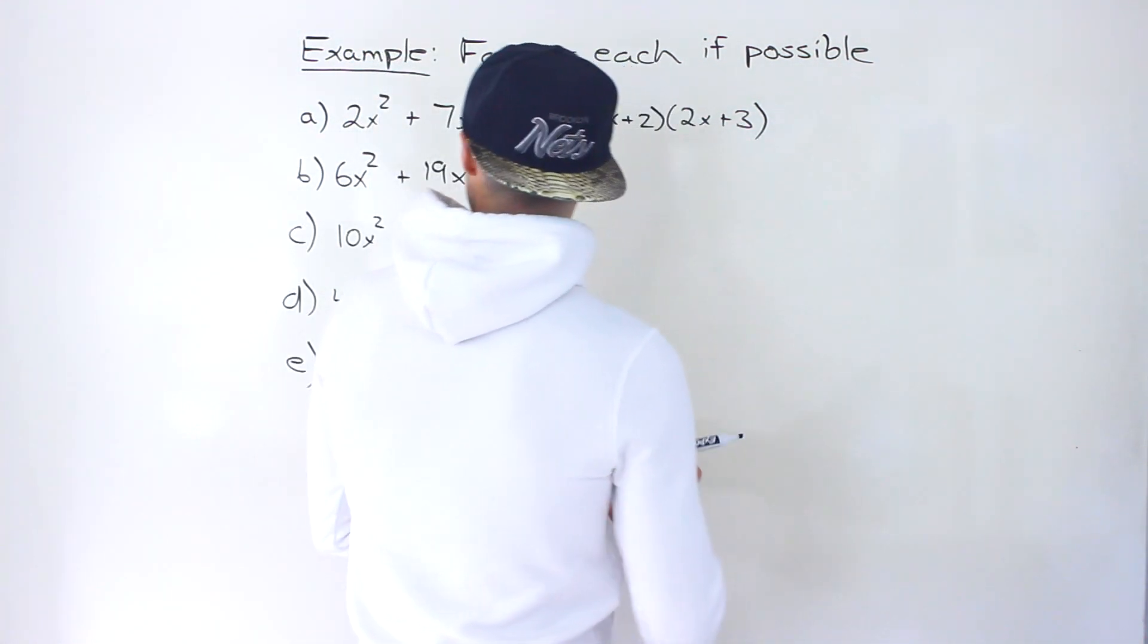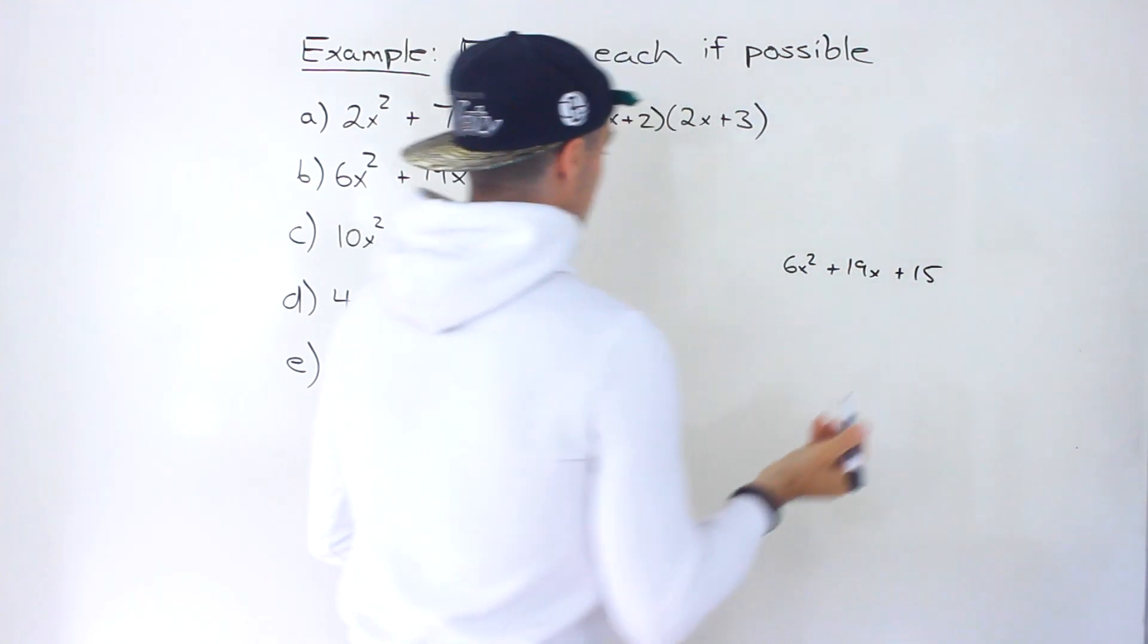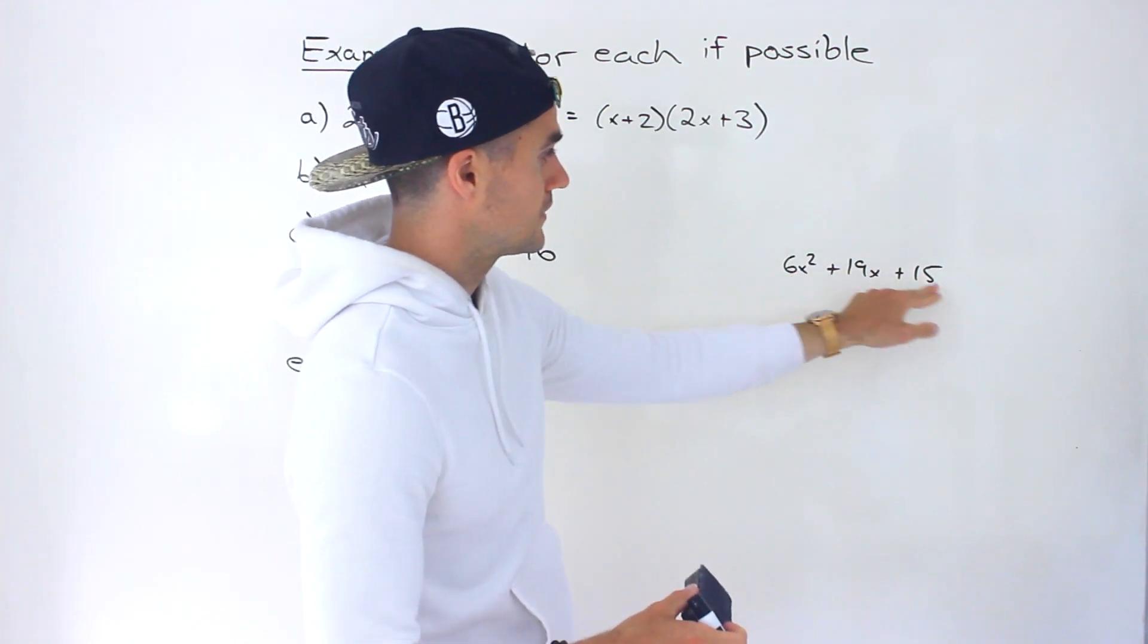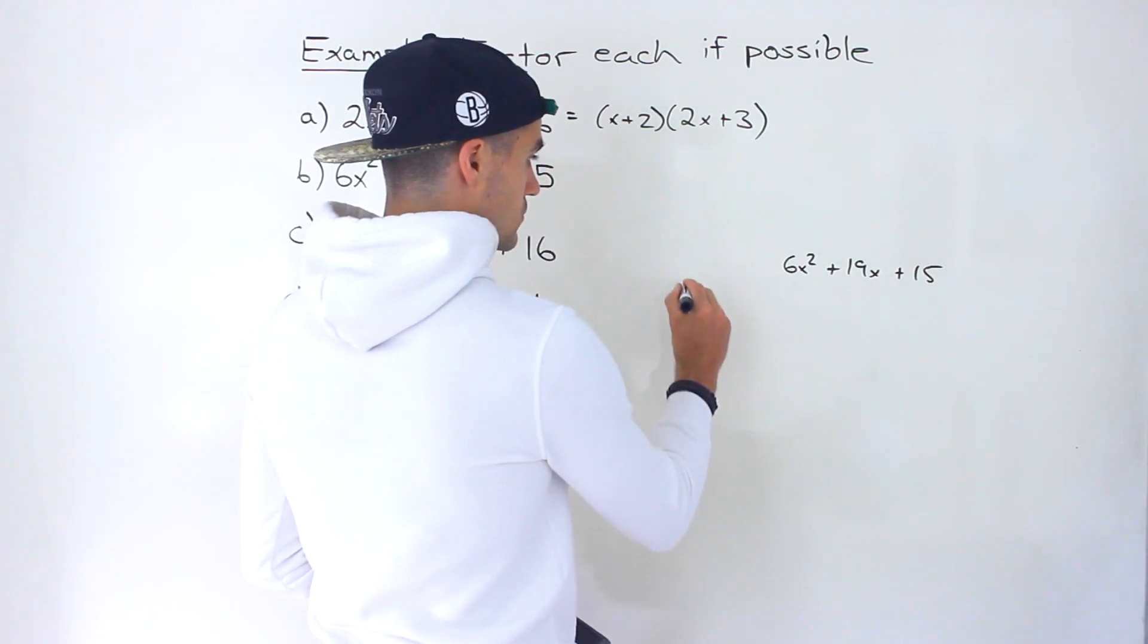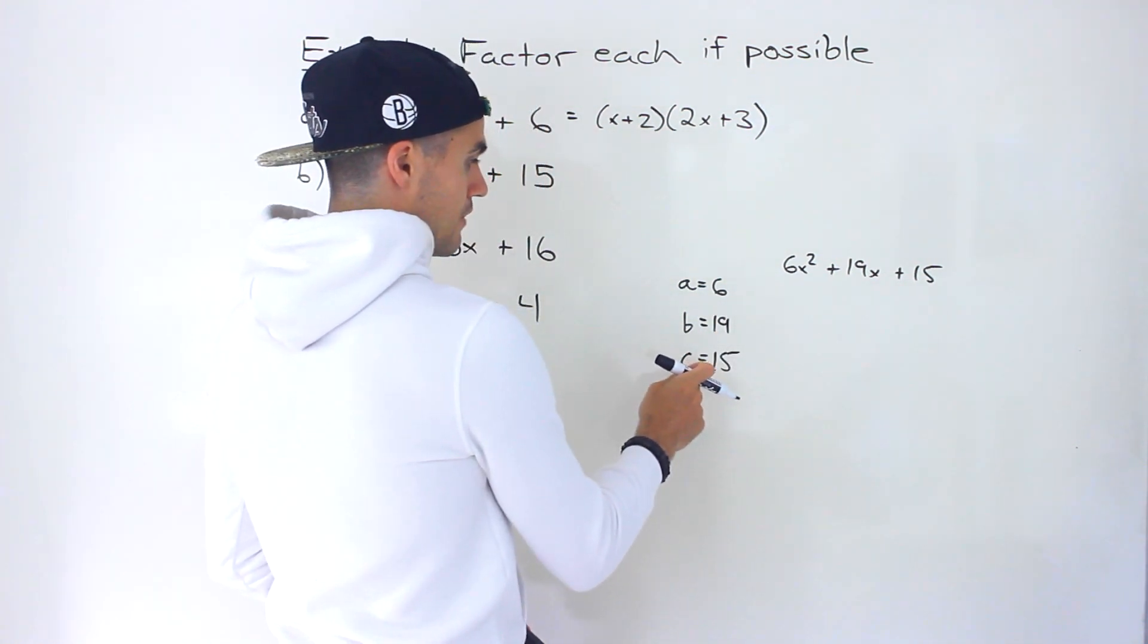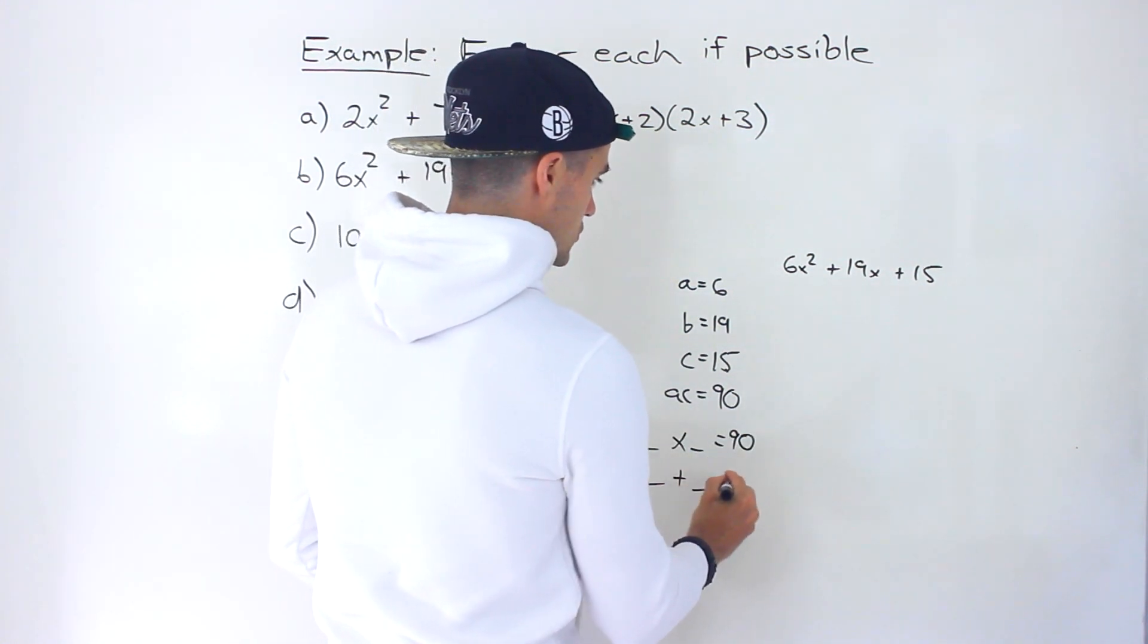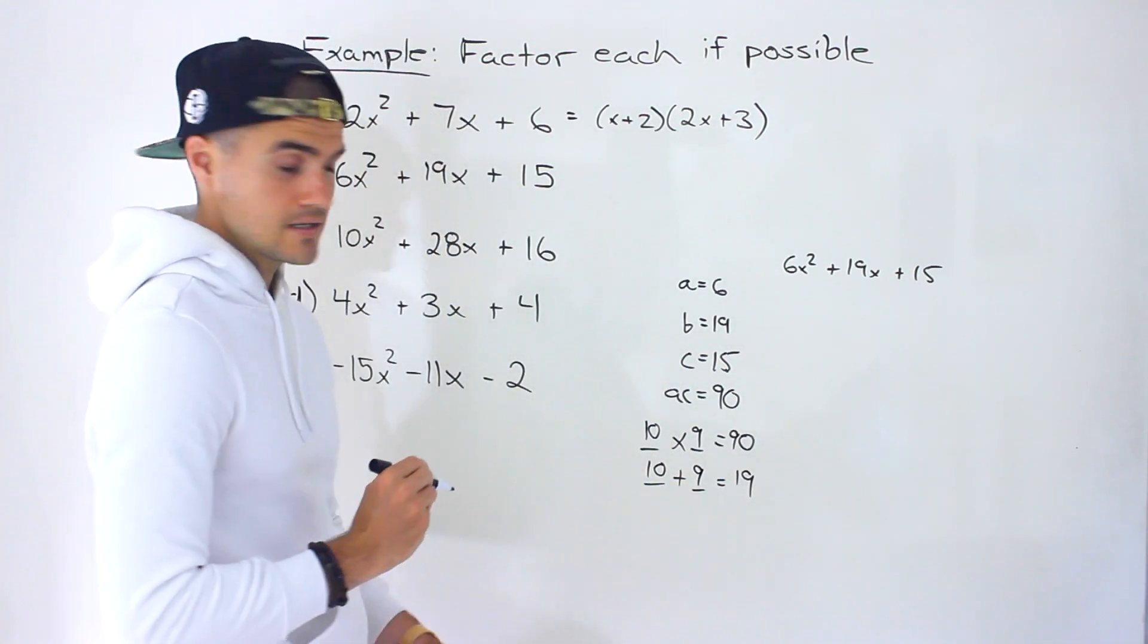Next up would be 6x² + 19x + 15. As usual, first thing we check for is greatest common factor. Between 6, 19, and 15, there's no common number that we could take out. There's x's here, but no x variable there. Can't take anything out initially. So let's go into the decomposition. We'll have an A value of 6, a B value of 19, and the C value of 15. Then we have to get the AC value, which would be 90. 15 times 6 is 90. Find two numbers that multiply to 90 and add up to 19. Those two numbers would be 10 and 9.